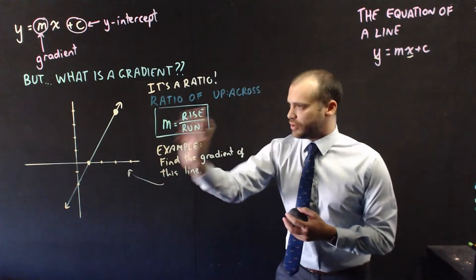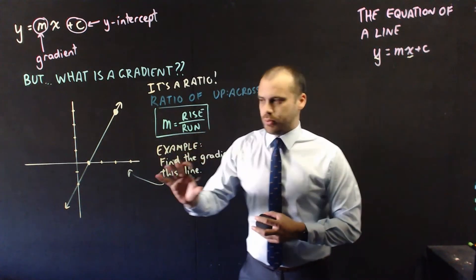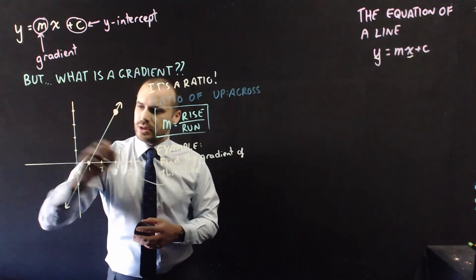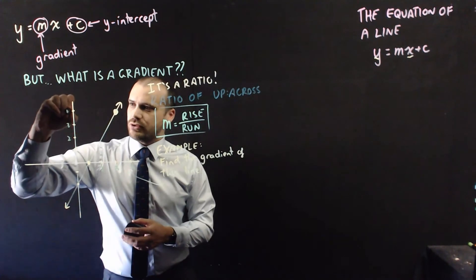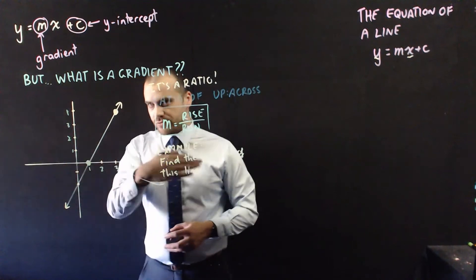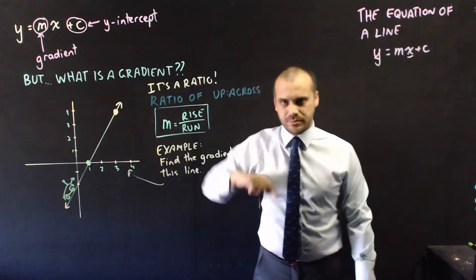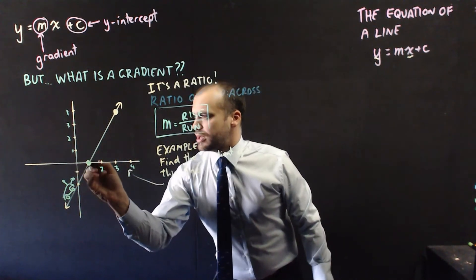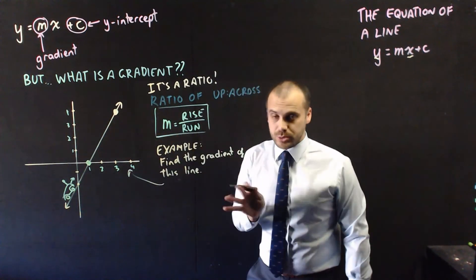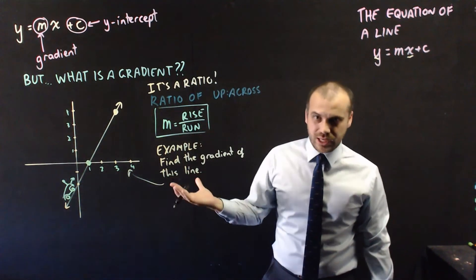So now we can do a question: find the gradient of this line. We just pick a random point on the line that we know, and we imagine a car driving this way — that means it's driving up this hill. We pick a second point and draw across then up, making a right angle triangle. Then we ask: how far did I move up and how far did I move across?